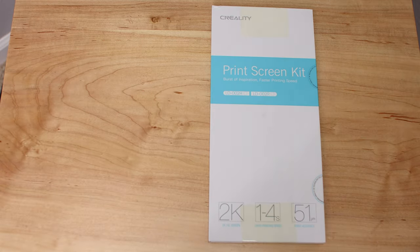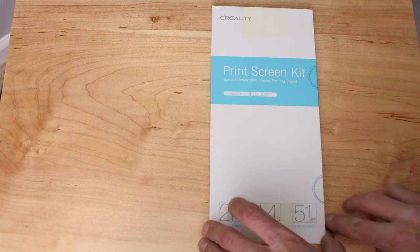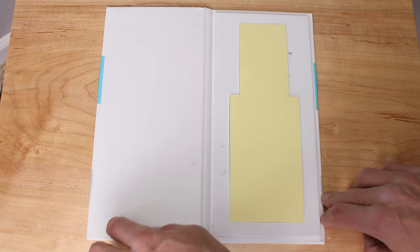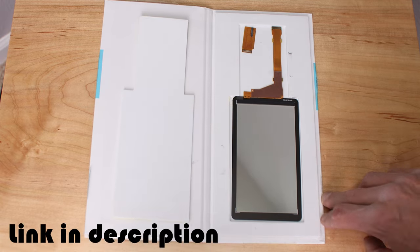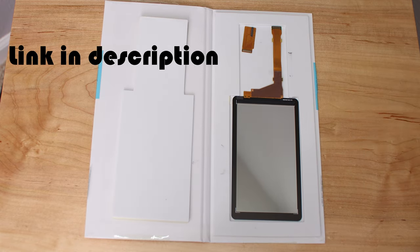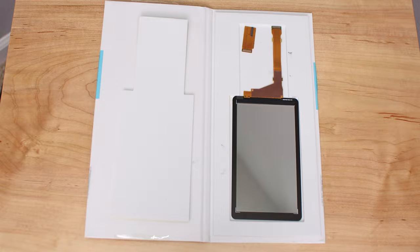Instead of using the official Anycubic screen, I'm going to use this one from Creality because it was cheaper when I was looking. Also the one for the Elegoo Mars works as well. So I'll have a link for all those down in the description. I would just choose whichever one is cheapest.